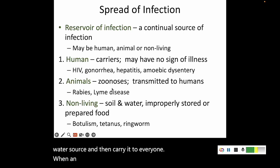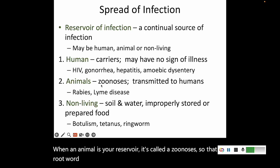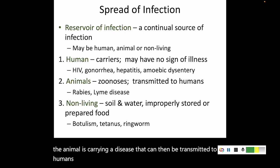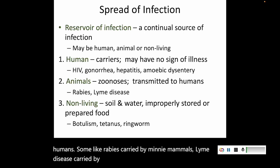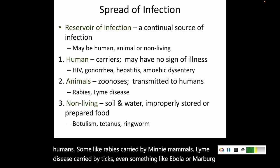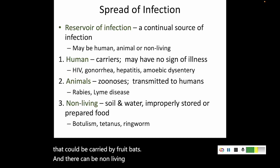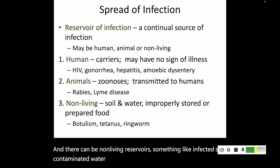When an animal is your reservoir, it's called a zoonosis — that root word 'zoo' should make you think of animals. The animal is carrying a disease that can then be transmitted to humans, such as rabies carried by many mammals, Lyme disease carried by ticks, or even Ebola and Marburg disease that could be carried by fruit bats. There can also be non-living reservoirs — things like infected soil, contaminated water, or food that hasn't been stored or prepared properly.